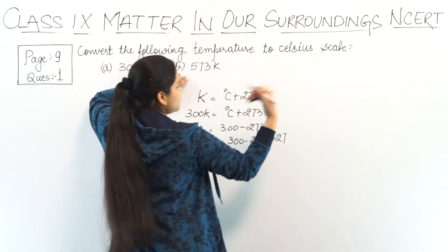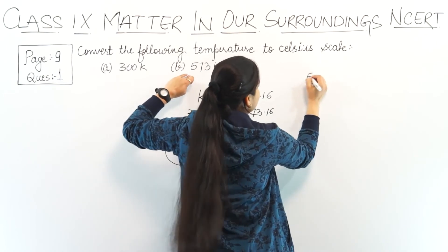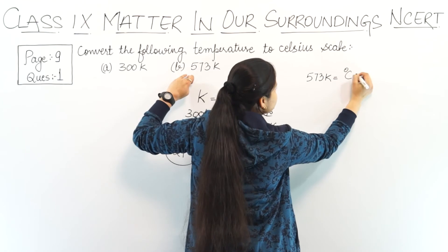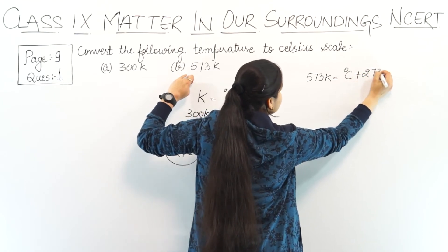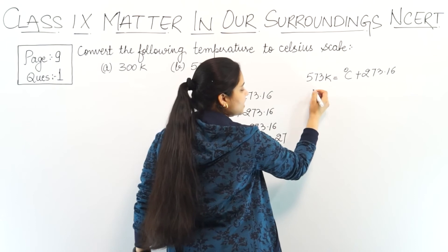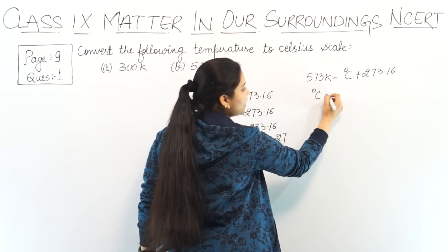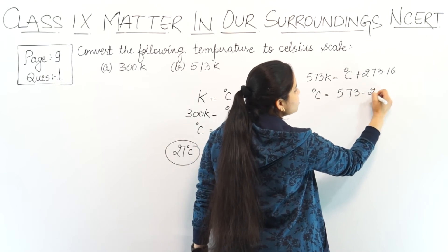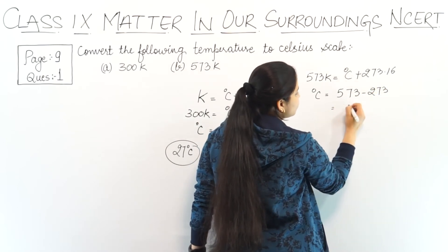Now coming to part B. Same thing. 573 Kelvin equals degree Celsius plus 273.16. We can ignore the 0.16. So degree Celsius, what is our temperature? It is 573 minus 273 which becomes 300.